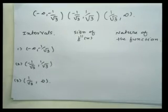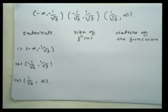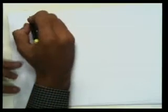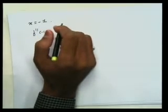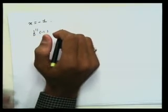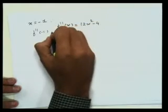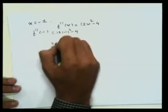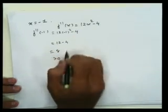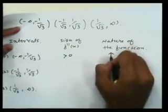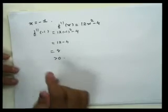We can find the sign of f''(x) in each interval by evaluating f''(x) at just one test point. For the interval (-∞, -1/√3), choose x = -1. Then f''(-1) = 12(-1)² − 4 = 12 − 4 = 8 > 0. So f''(x) > 0 in (-∞, -1/√3), which means the function is concave up on this interval.